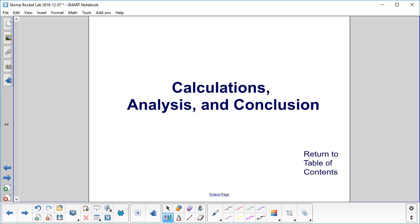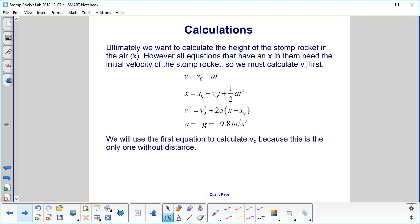Calculations, Analysis, and Conclusion. We want to calculate the height of the stomp rocket in the air, which we'll call x. However, all equations that have an x in them need the initial velocity of the stomp rocket. So here's v0, here's v0, here's v0, everybody needs it. So we have to calculate v0 first.